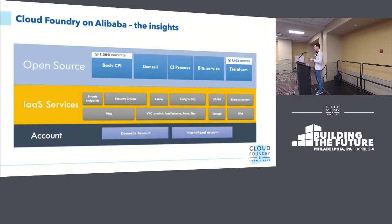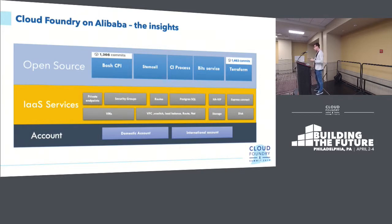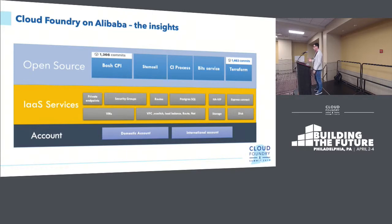The most interesting part is the Cloud Foundry section — the top-most implementation of what Alibaba has achieved — and it's actually very impressive. In two years' time, even before that, after around half a year, they already came up with a BOSH CPI implementation that essentially enabled deploying Cloud Foundry on Alibaba.